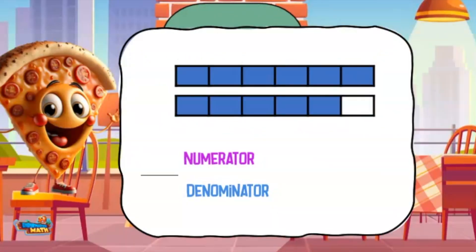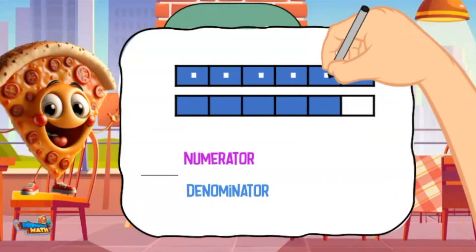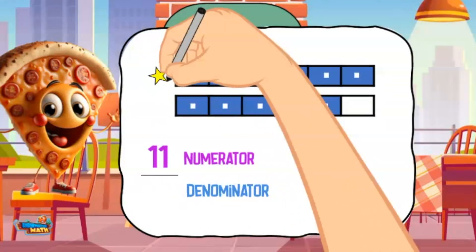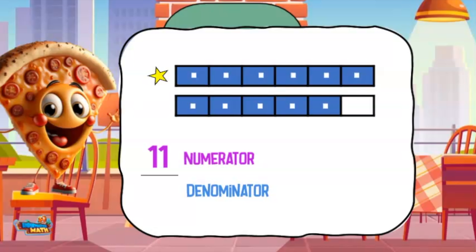Sometimes fractions represent more than one. In this example we see one whole and another part of a whole. I start with the numerator — the numerator is the number of blue parts. There are 11, so I write the number 11 on top of the fraction. Now to find the denominator, go back to the whole and count how many pieces it takes to make the whole — this is the denominator. It takes six parts to make a whole, so I write a six on the bottom of the fraction. This fraction is read as 11 sixths.